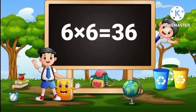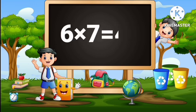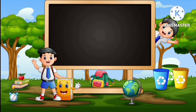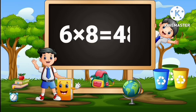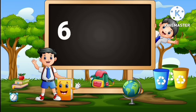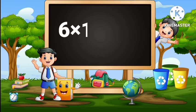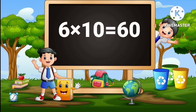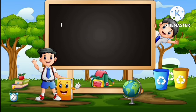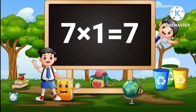Six sixes are thirty-six. Six sevens are forty-two. Six eights are forty-eight. Six nines are fifty-four. Six tens are sixty. Seven ones are seven.